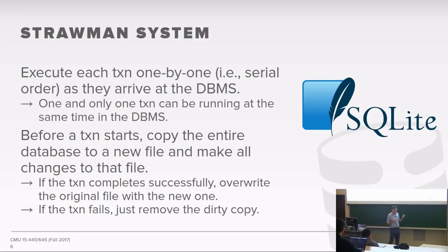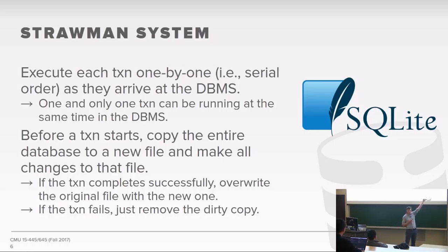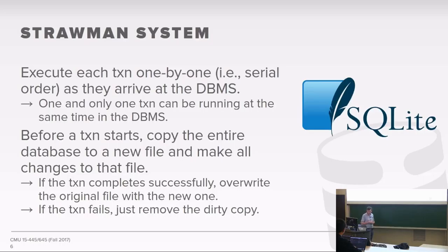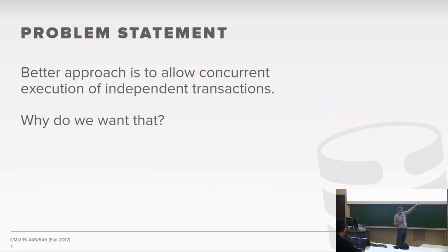This is also what IBM did in the very first version of System R — they used a technique called shadow paging, where instead of copying the whole file, you just copy the pages you actually need to modify, then flip a pointer at the end to say here's the correct version. Now, what we're going to talk about in the next couple of classes is how to allow multiple transactions to run at the same time and read and write to the database simultaneously without having to make an entire copy of the database file every single time.